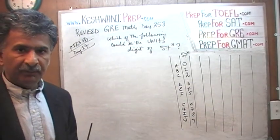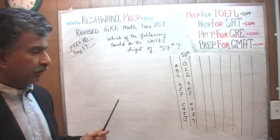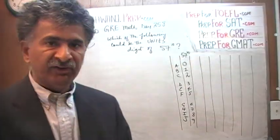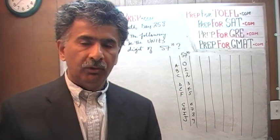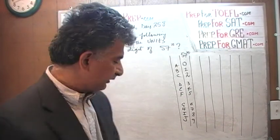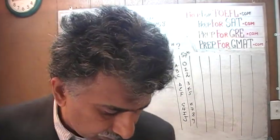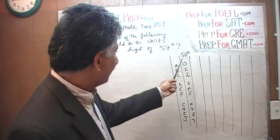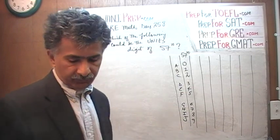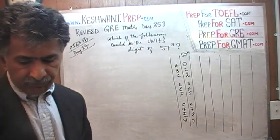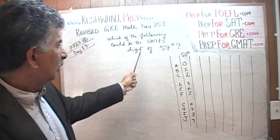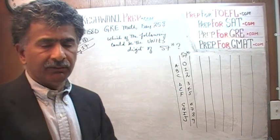It is the exact same problem we solved a long time ago on day number 17. I am going to redo this problem at a faster pace and then give you a whole bunch of bonus problems. The question here is: which of the following could be the unit digits of 57 raised to N?